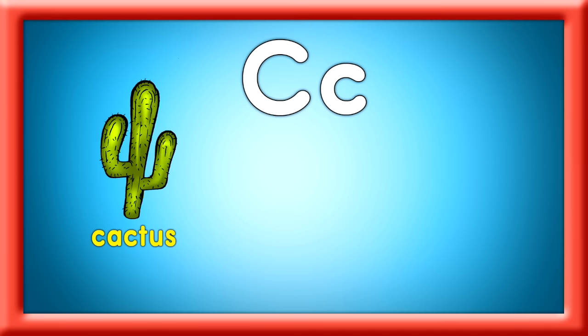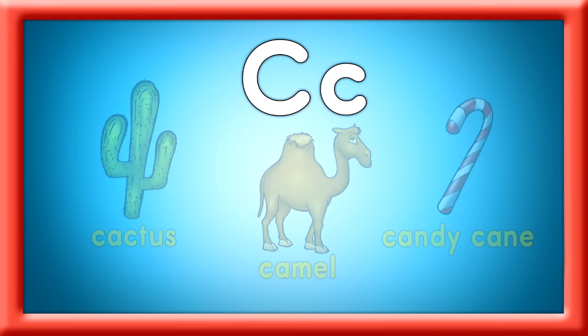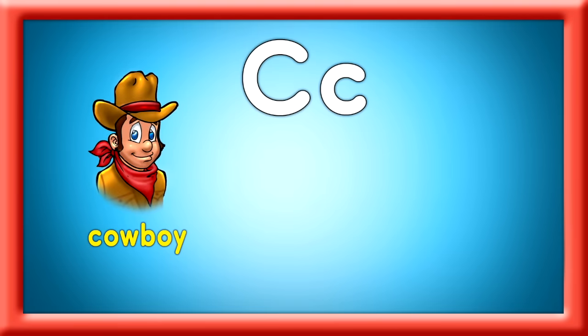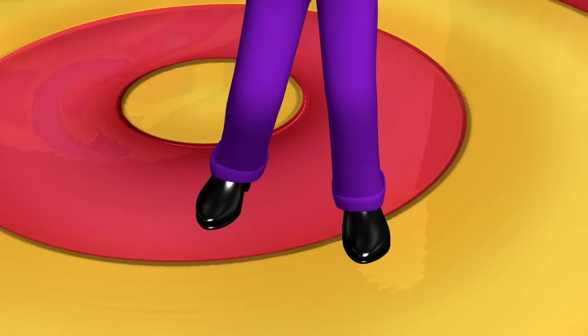Cactus, camel, candy, cane. All these words begin the same. Cowboy, cupcake, cuckoo, clock. These are C words. Now let's rock.